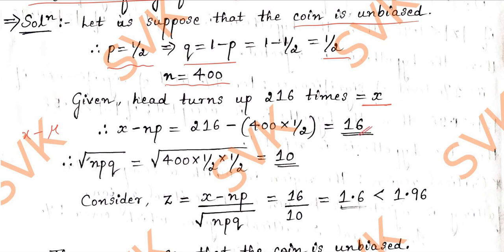And find out standard deviation, that is square root of NPQ. We are going to get square root of N value, P value, Q value. Simplifying that, I am going to get value as 10.